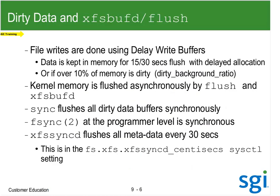Files writes are done with a delayed write buffer. Data is kept in memory for a certain amount of time, giving us a delayed allocation capability. 15 seconds for XFS, but then the flush daemon does a 30-second flush. Now here's the problem: if 10% of my memory is dirty, we're going to start flushing. 10% of your 16 terabyte machine is 8 terabyte of dirty data - I really don't want 8 terabyte of dirty data to build up on me.